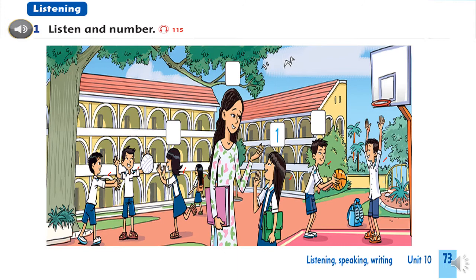Secondly, you are going to listen to a description of people and write the number. Let's listen carefully. Listen and number. Number 1: Can you see Oanh's friends? This friend has long black straight hair. It's V.